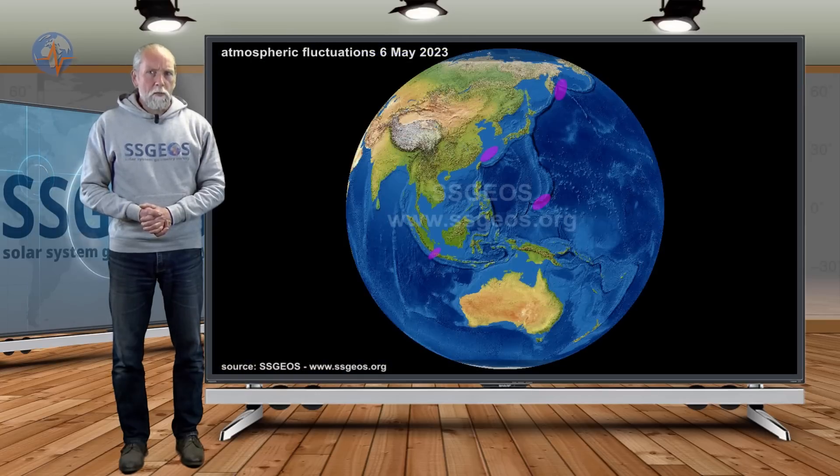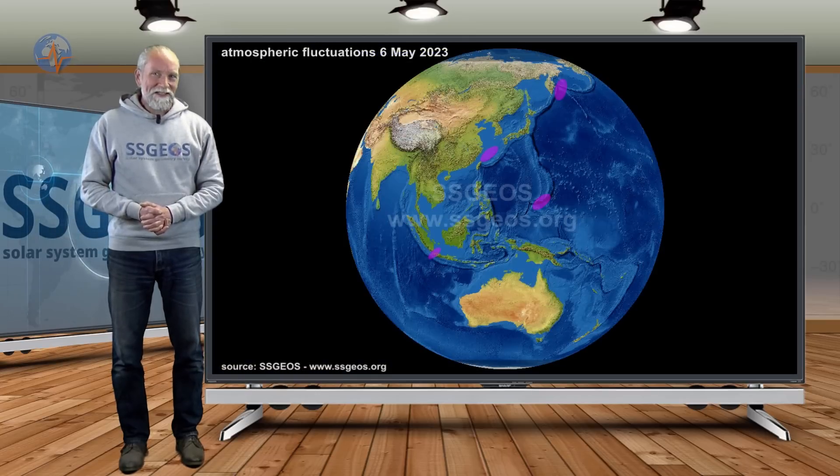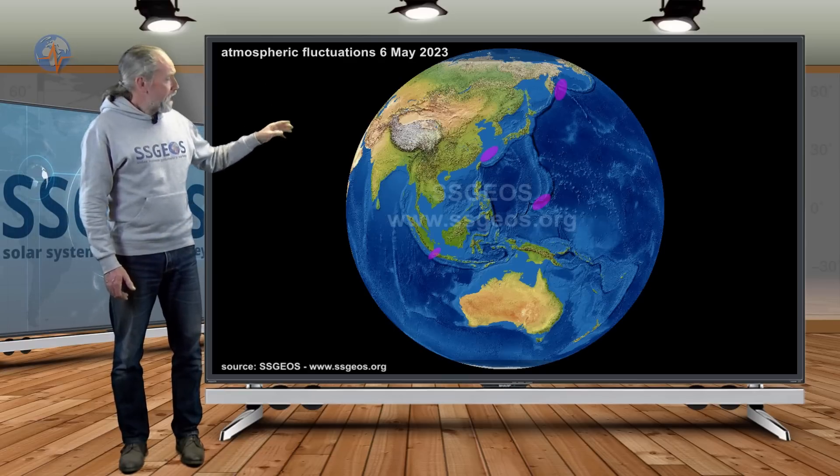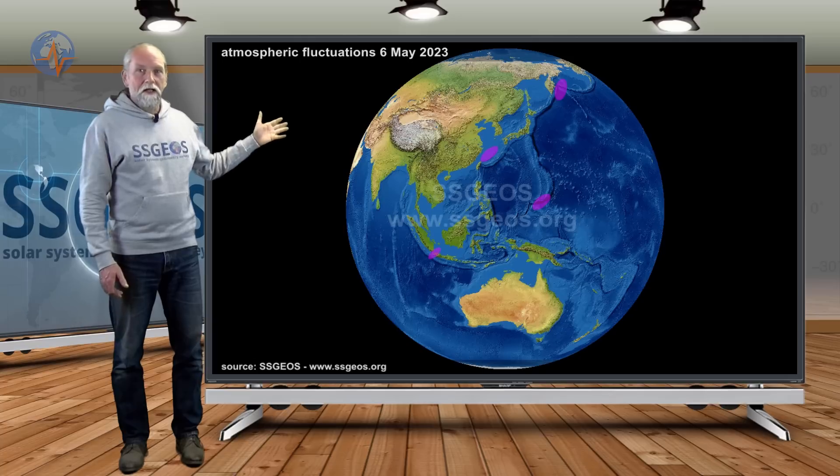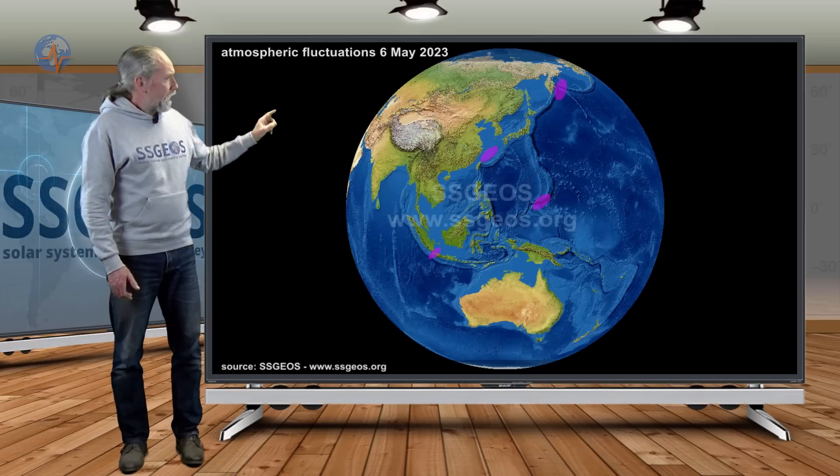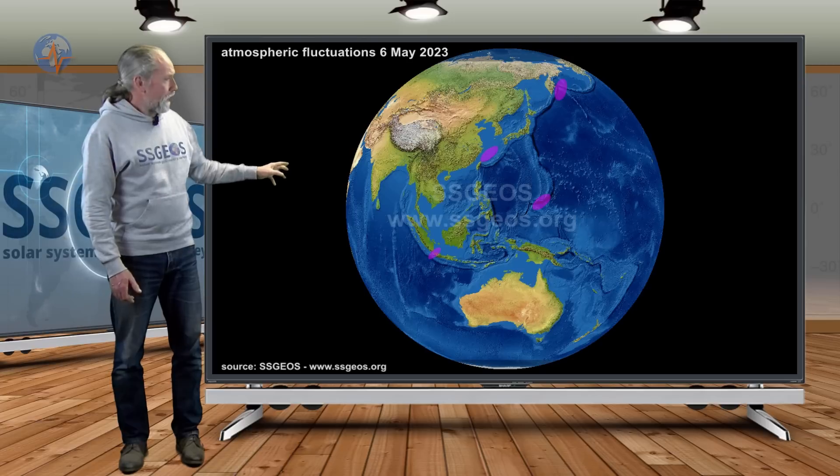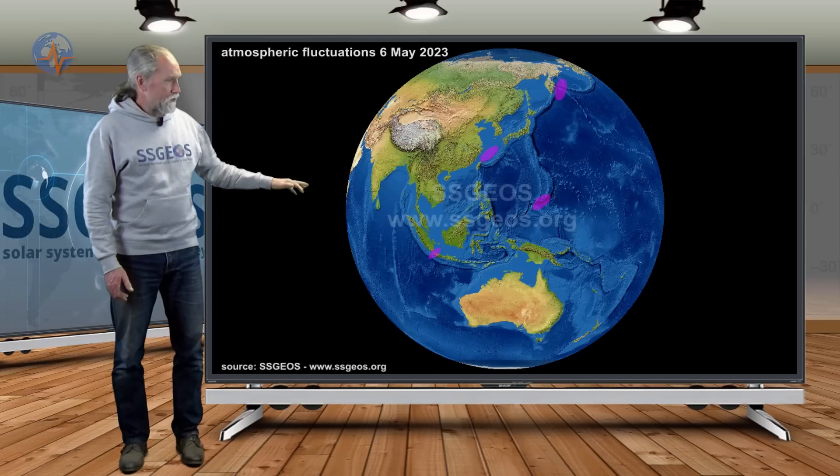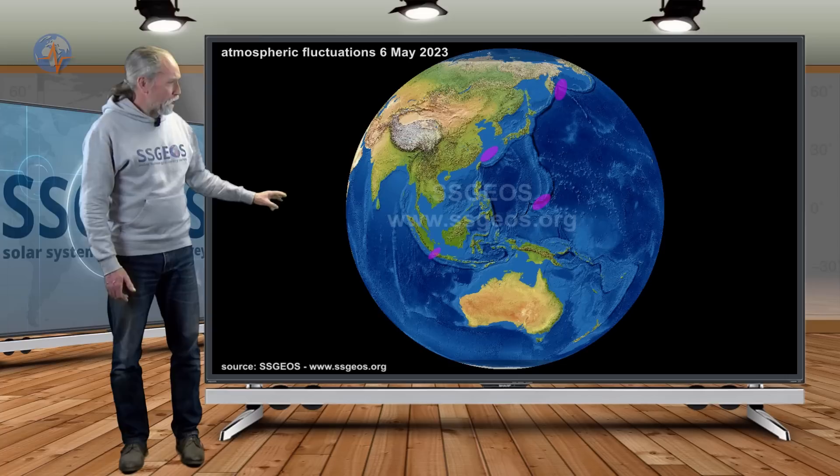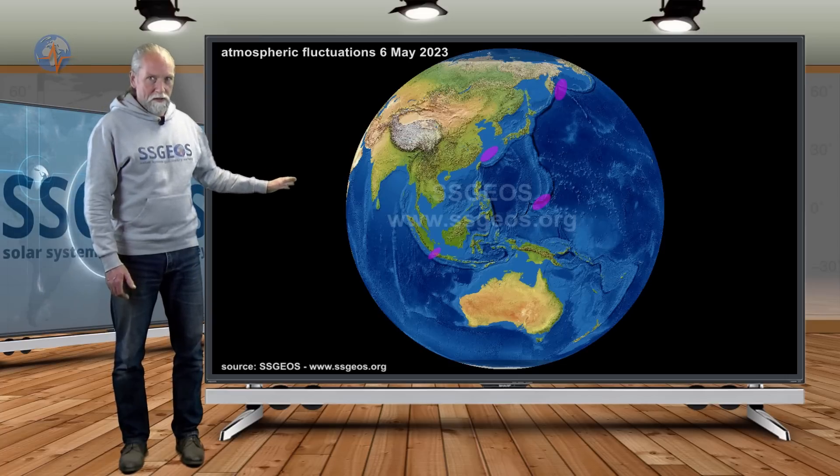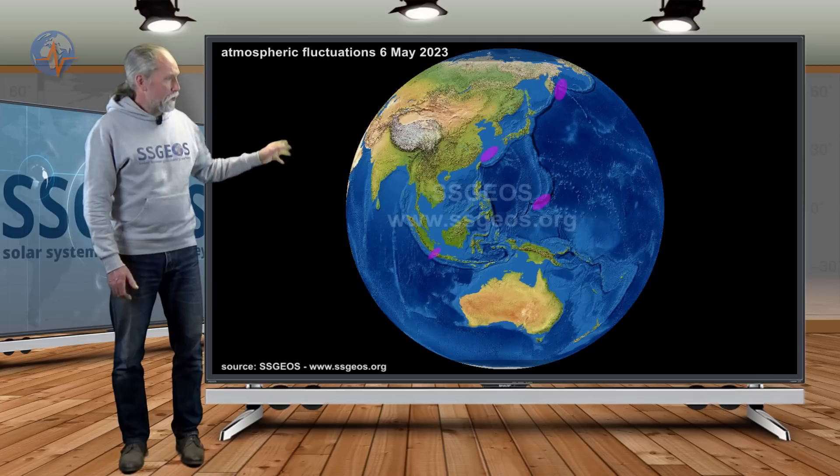We had a couple of fluctuations yesterday, marking the West Pacific primarily. This may have to do something with what we had in Japan on the 5th. To the north we see Kamchatka, the north of Taiwan also and the Mariana Islands. These are the fluctuations that we had and possibly also a weak fluctuation, West Java and South Sumatra. I am not sure if that is really significant, but to the north is.